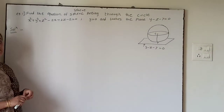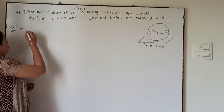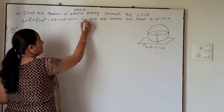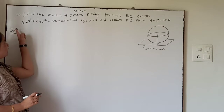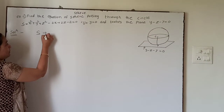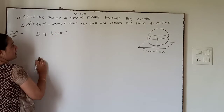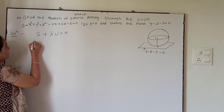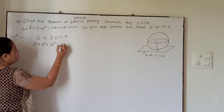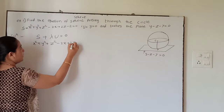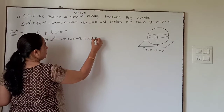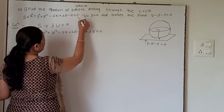As we know, the equation of a circle is given by two equations — one is the equation of a sphere and another is the equation of a plane. The equation of a sphere passing through the circle is given by S + λU = 0. That is, x² + y² + z² − 2x + 2z − 2 + λy = 0. This is equation number 1.